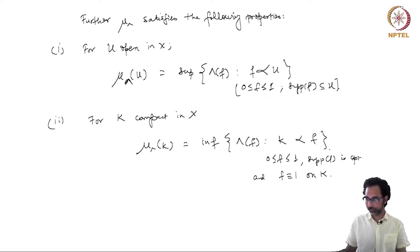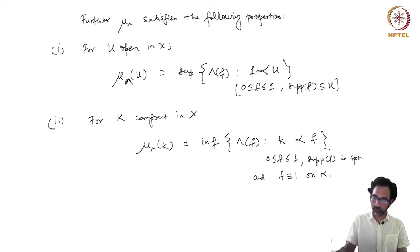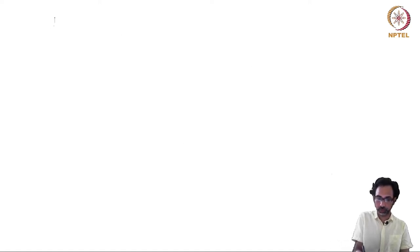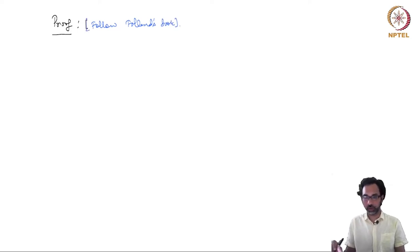Let us look at the proof of the Riesz representation theorem. There are many proofs available, and I have decided to follow the proof in Folland's book, which I found to be quite nice. This is Theorem 7.2 in Folland's book.